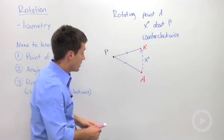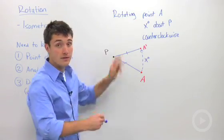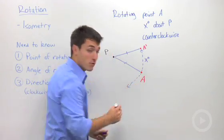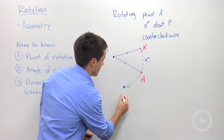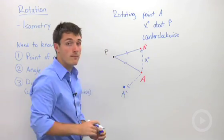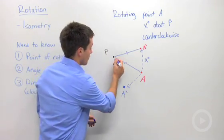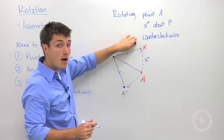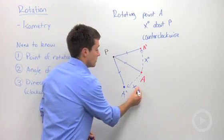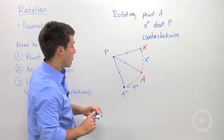If I had said clockwise, we would have rotated it, not in this direction, but it would have been over here. So I guess I could call this a double prime. So a double prime would have been a clockwise rotation x degrees about point P.